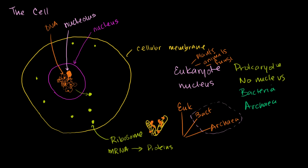So we're at the ribosome—that's where proteins get produced. If the ribosomes are just floating around as free ribosomes, then those proteins, once produced at the ribosome, will just float around in the fluid inside the cell that we call the cytosol.